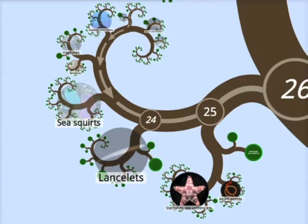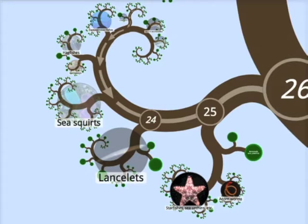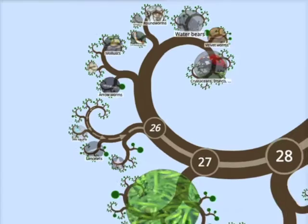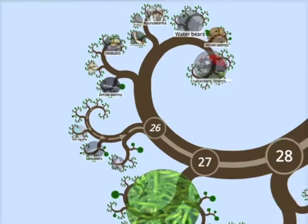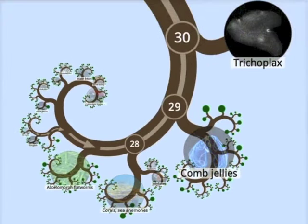Then the echinoderms — the starfish and their relatives. Then the biggest group of all joins: not just the insects, but most of these three stacks over there — the insects and many other invertebrates join us at that point. Some other worms join us. Corals and jellyfish join us. A strange thing called the trichoplax joins us all on its own. And then the sponges join us. These are all the animals now.